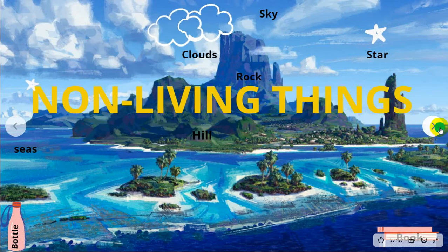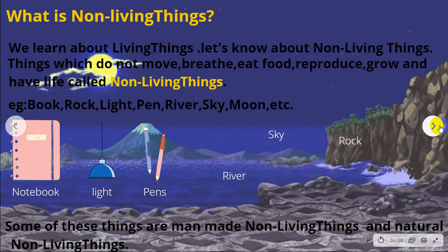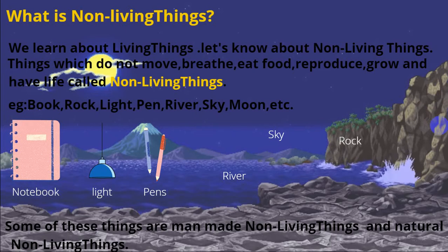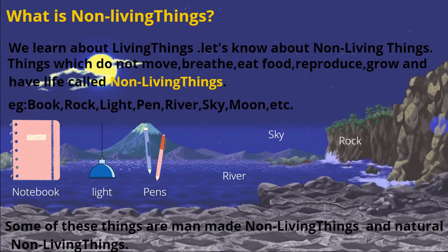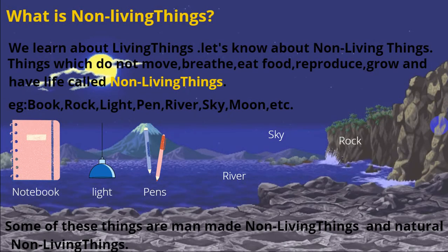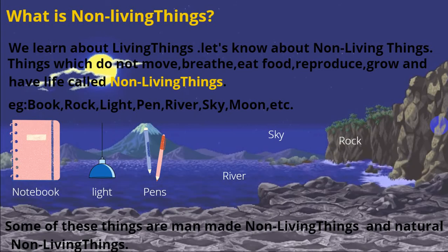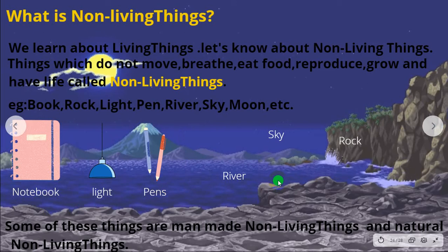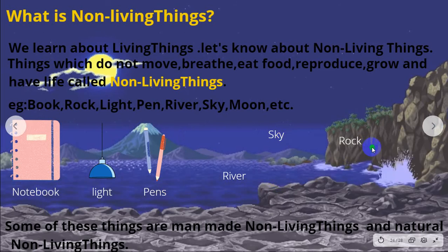Non-living things — what are non-living things? Things which do not move, breathe, eat food, reproduce, grow, or have life are called non-living things. Examples include book, light, pin, river, sky, rock, and other things.